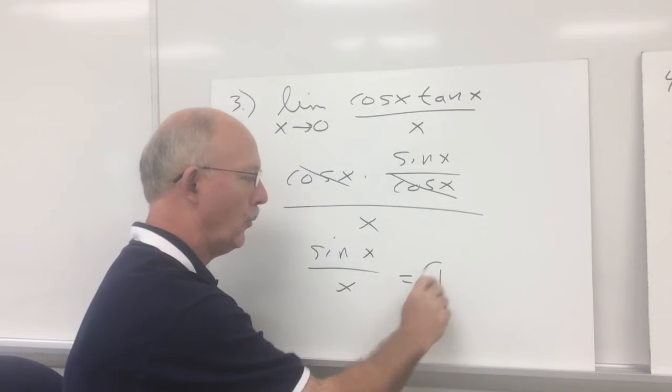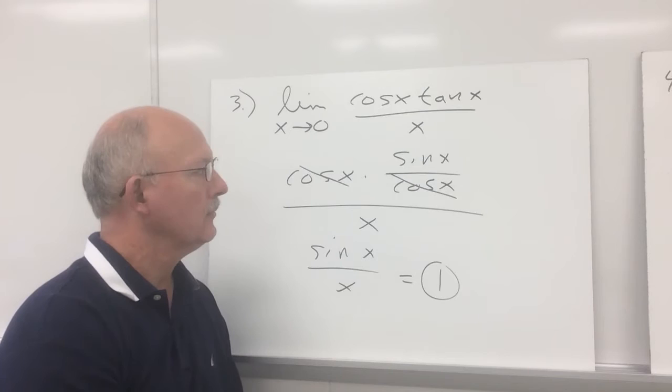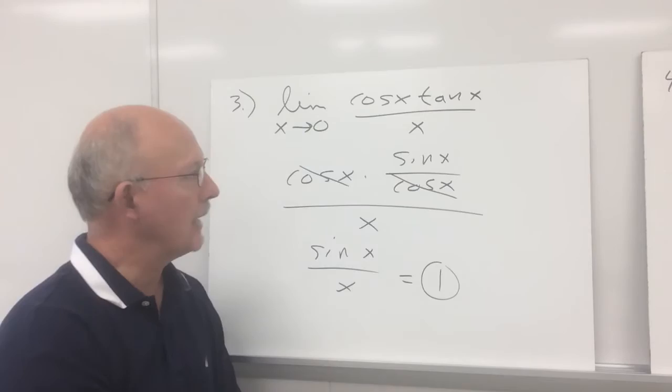I knew we had to use sin x over x somewhere here, and we get that by rewriting the tangent x. So if you've got tangent in a lot of these problems, you're going to have to rewrite it as sin over cosine.